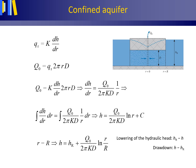This slide shows the derivation of the Dupuis equation. Here we have the Darcy equation. Here we have the continuity equation. We insert the Darcy equation into the continuity equation — this is what we get. We rewrite it in this shape, and then we integrate it as shown here, which gives this answer. Then we insert the boundary condition: small r equals large R to find C, and then this is the equation we get.